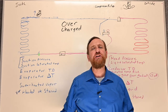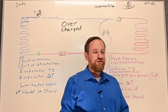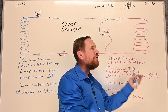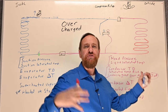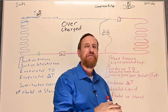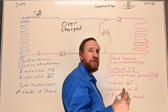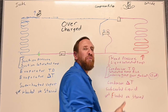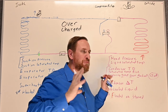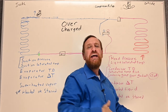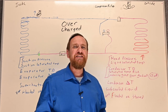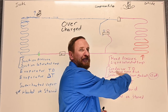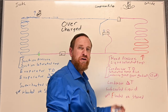An overcharged system means there are extra molecules — more molecules of refrigerant. As we add more and more molecules of refrigerant, what do you think the head pressure is going to do? It's trying to push more molecules into that same area. The head pressure is going to go up, because we have more molecules being squished together. If I put more molecules of air in a tire, the tire pressure goes up. So more molecules of refrigerant — too much refrigerant — is going to cause the pressure to go up.